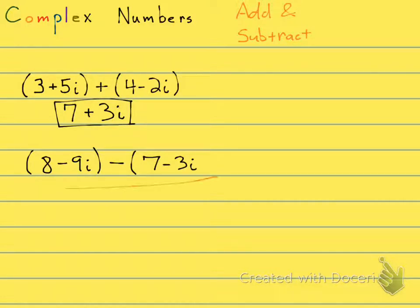Let's look at this problem down here. This is 8 minus 9i, a complex number, and we're subtracting a complex number of 7 minus 3i.